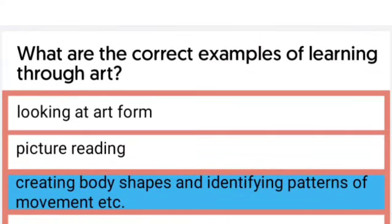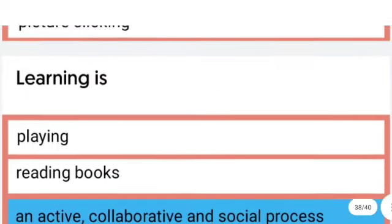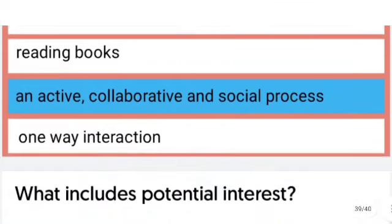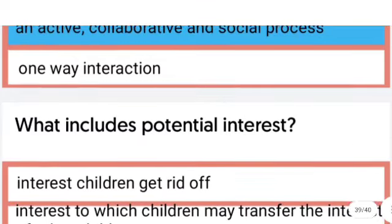What are the correct examples of learning through art? The correct examples are creating body shapes and identifying patterns of movement. What is learning? Learning is an active, collaborative, and social process.